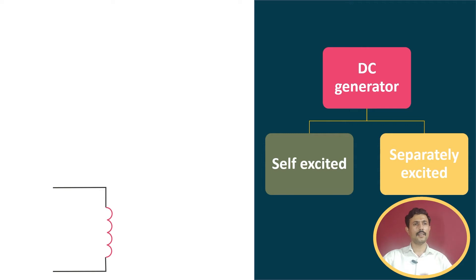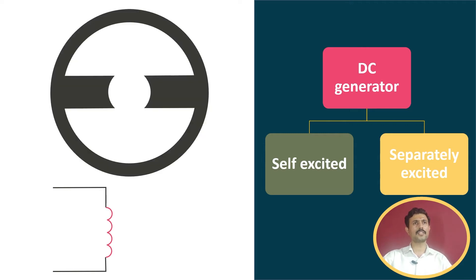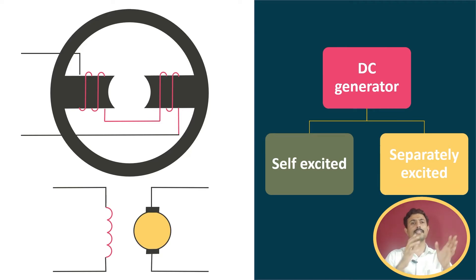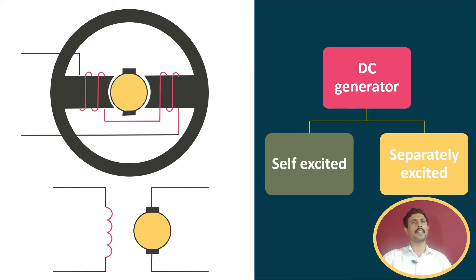Let's check the cross-sectional view of this separately excited DC machine — the field winding of this machine is arranged in this manner. In the connection diagram, there is an armature and the two terminals of this armature are connected to the load. In the cross-sectional diagram, the armature is placed like this and the two terminals are taken out and given to the load.